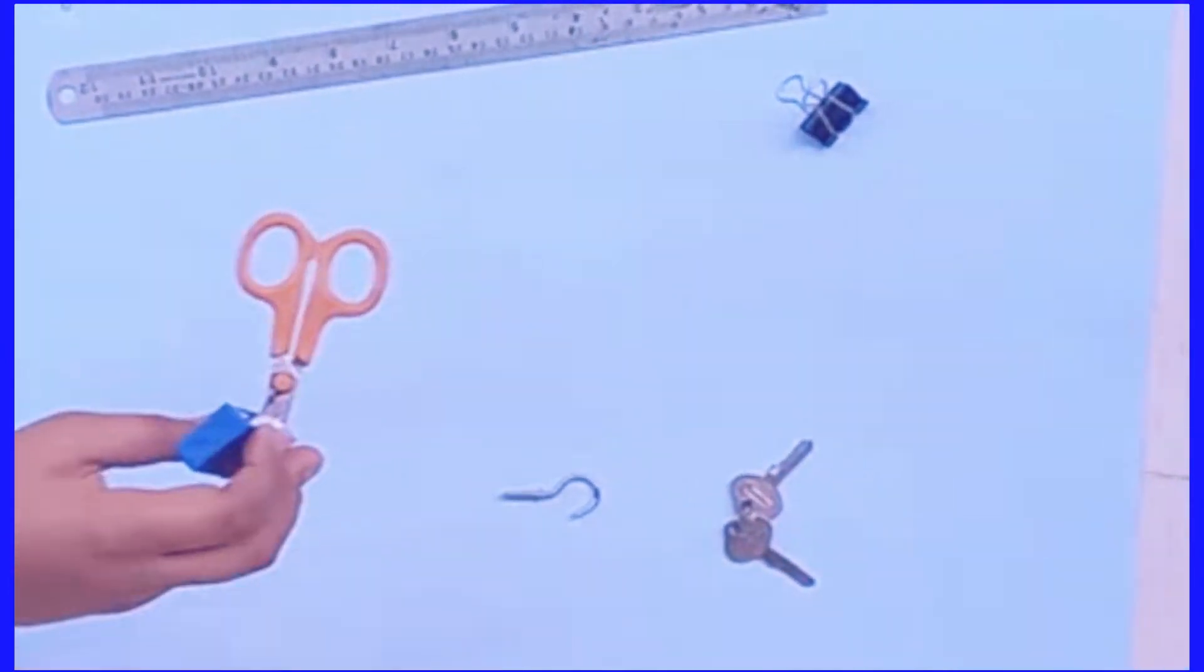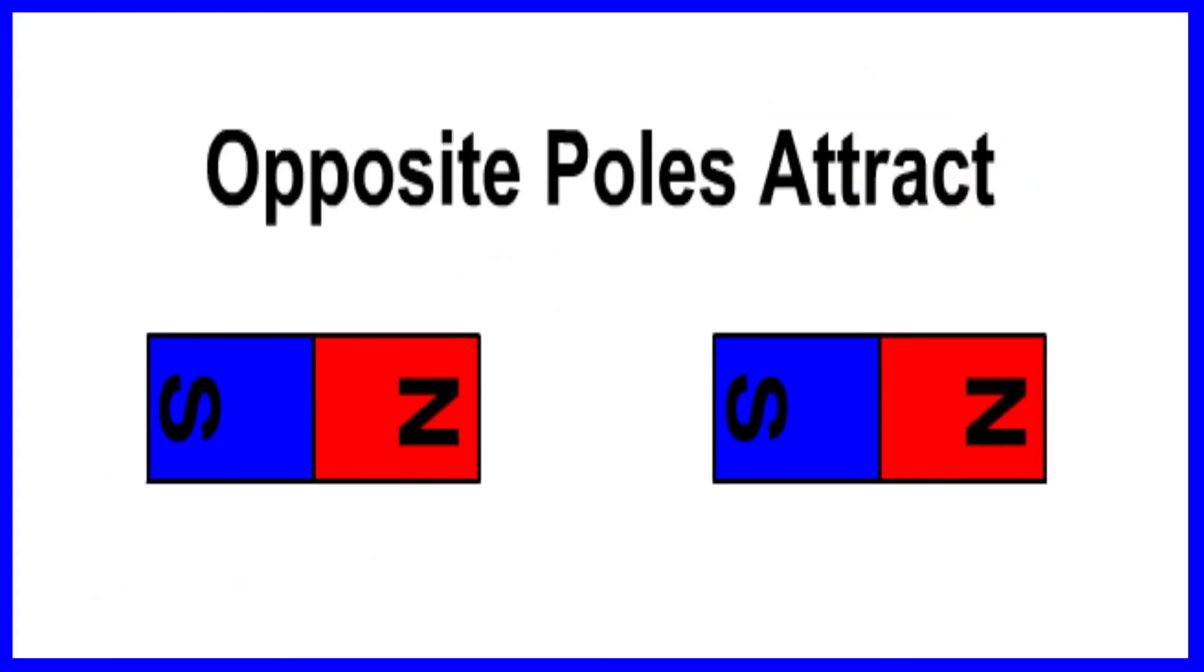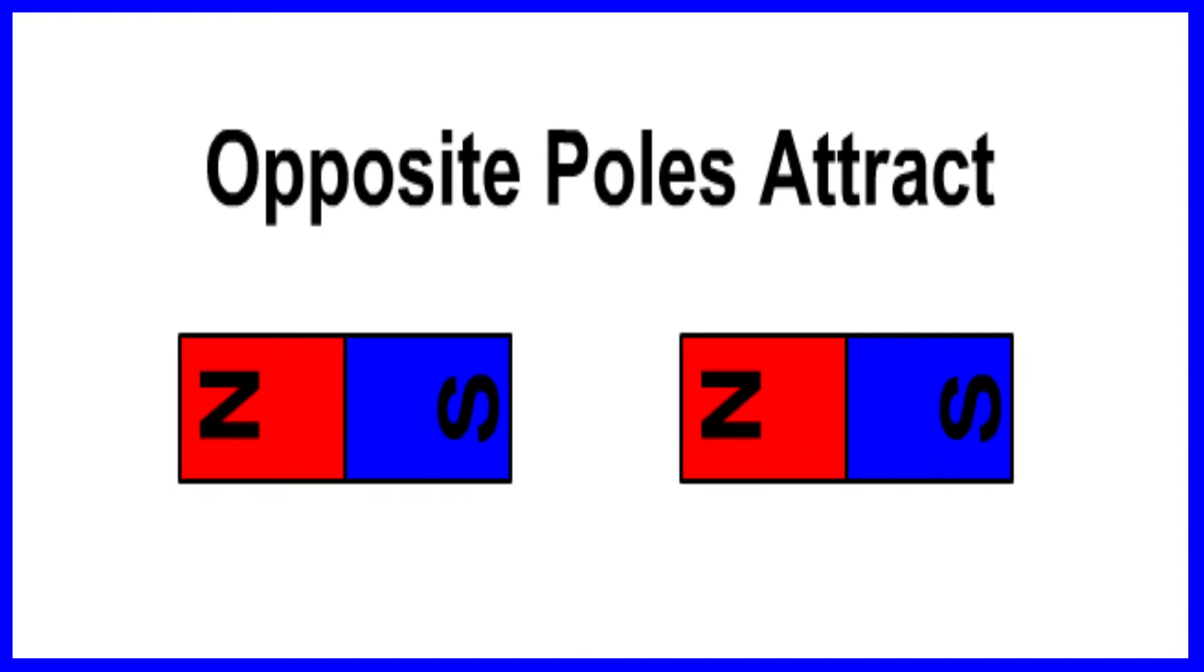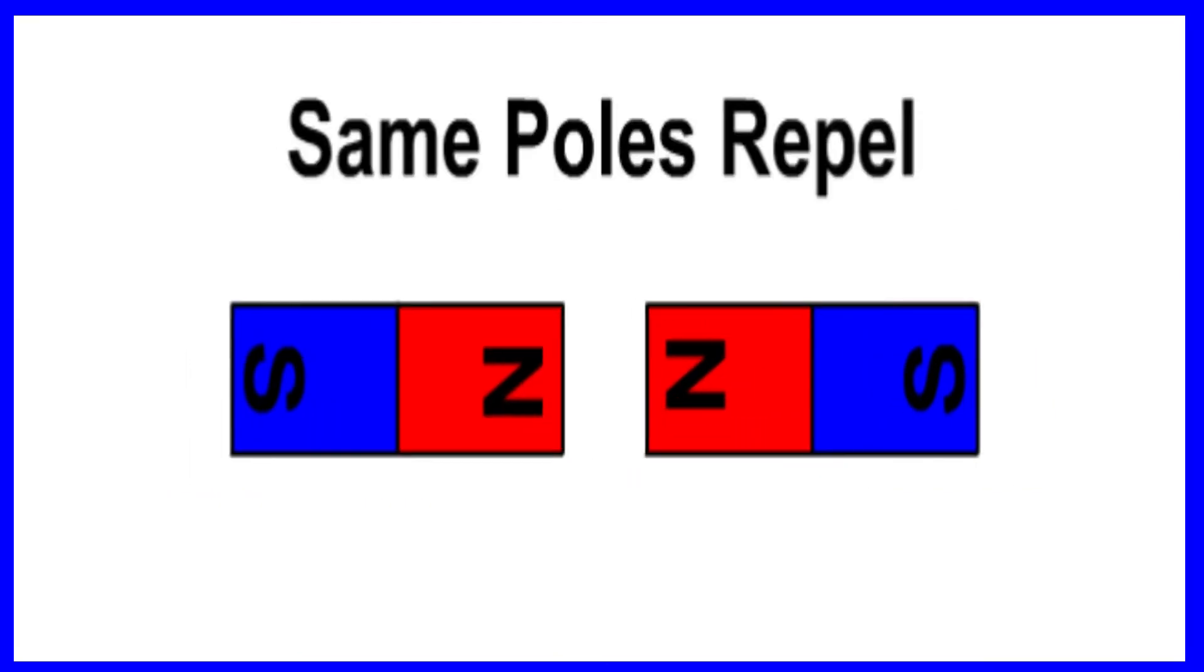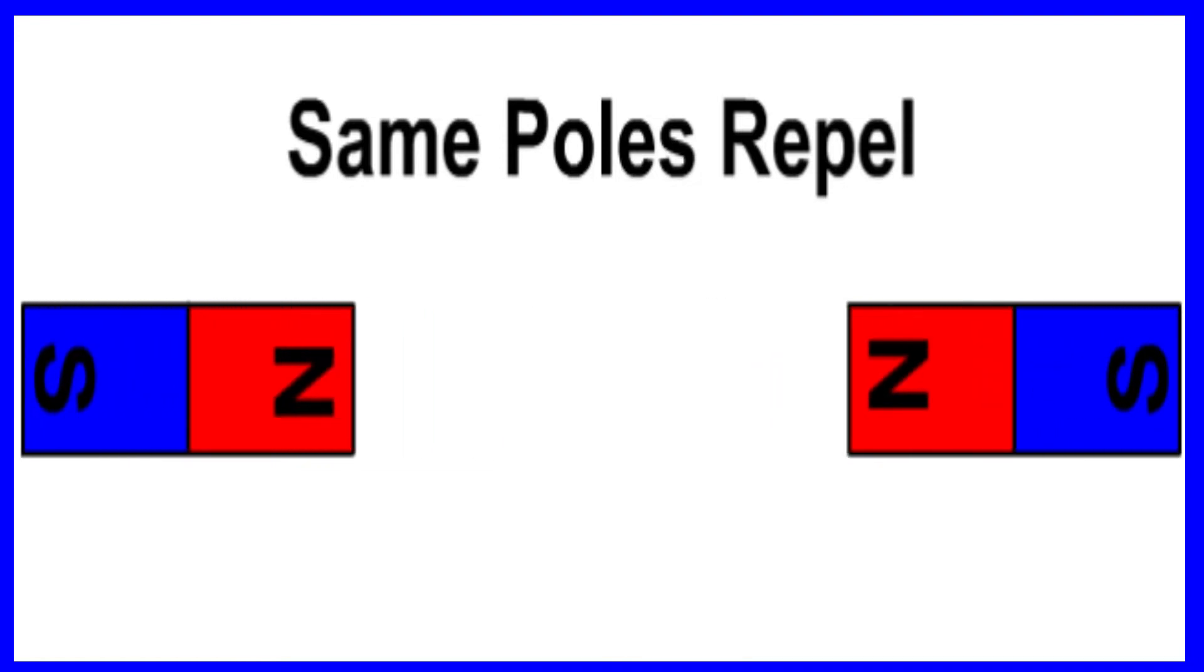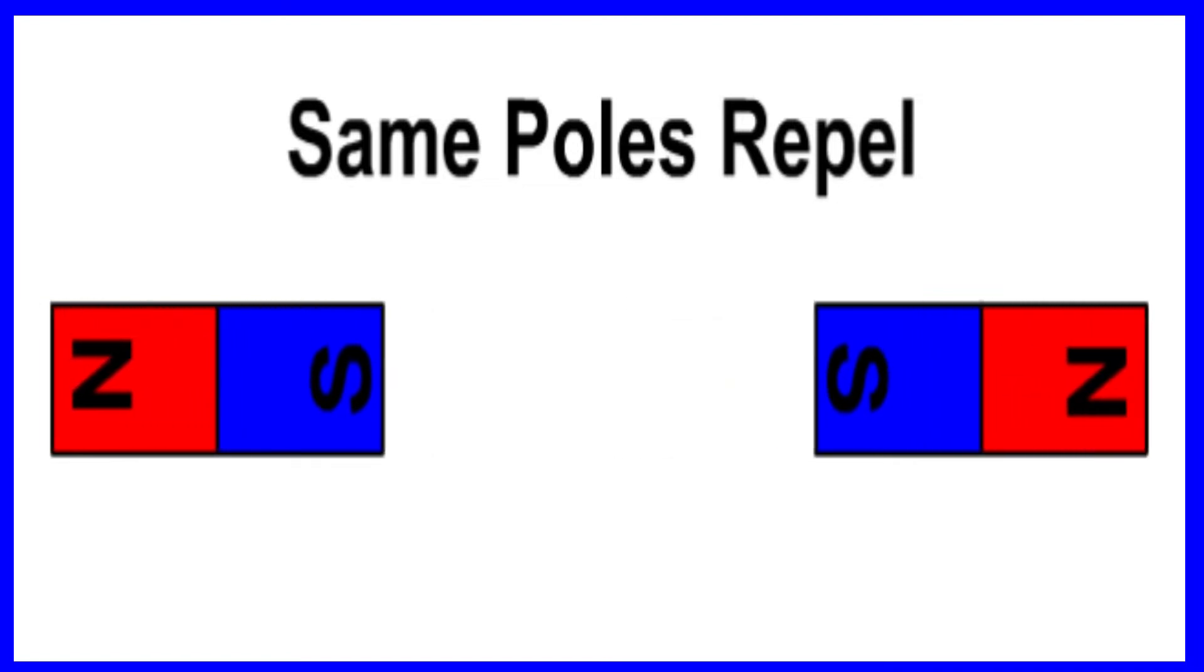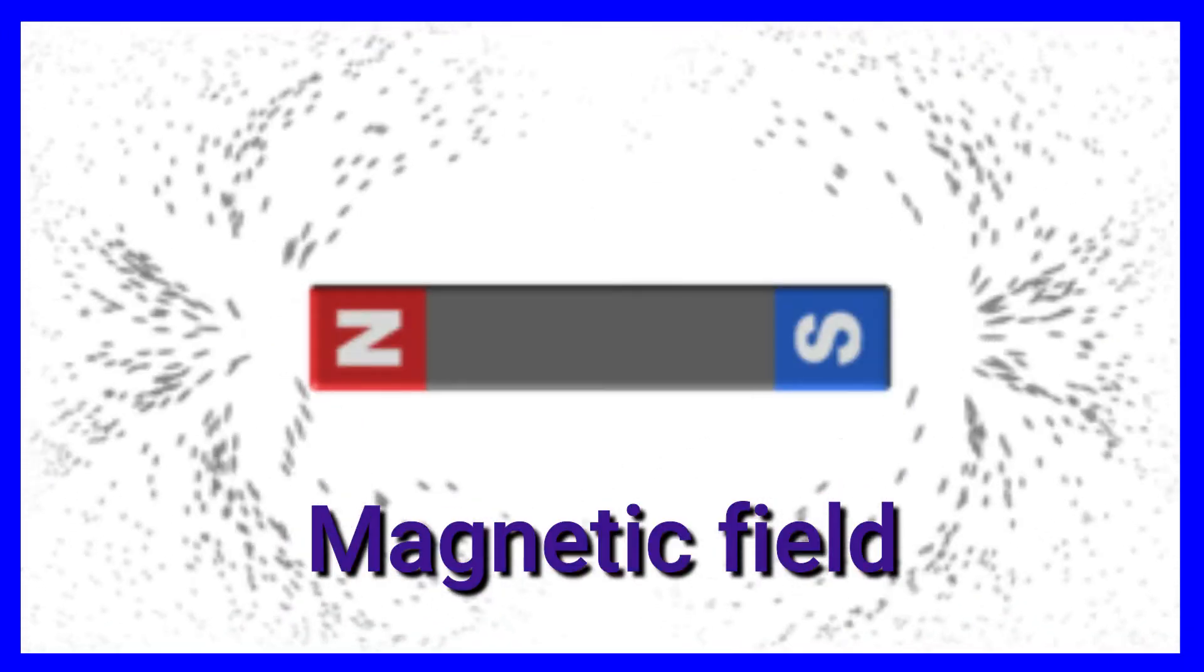It has two poles: north pole and south pole. Magnets attract opposite poles, like south pole and north pole or vice versa. Magnets repel the same poles, meaning north pole and north pole or south pole and south pole move away from each other.